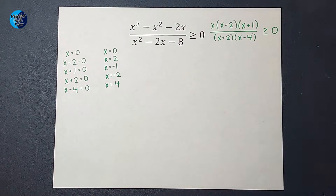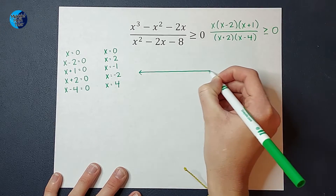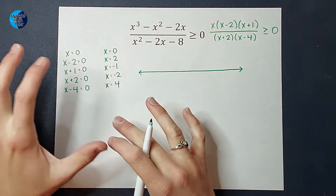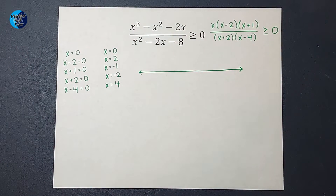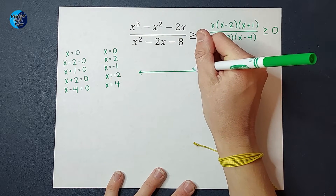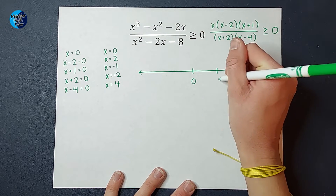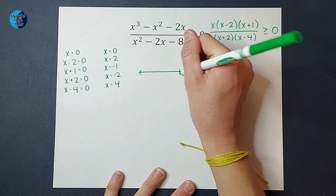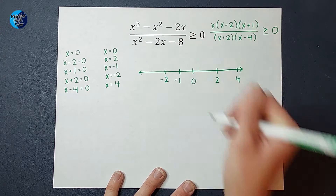And add 4 to both sides, get x equals 4. Next, I'm going to draw a number line. I want to represent each of these numbers on my number line. So my spacing doesn't have to be perfect, but we're going to mark approximately 0, 2, 4, negative 1, and negative 2.